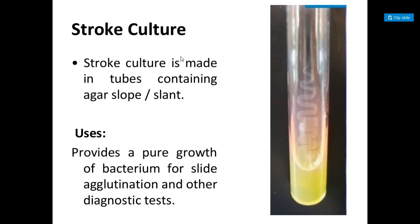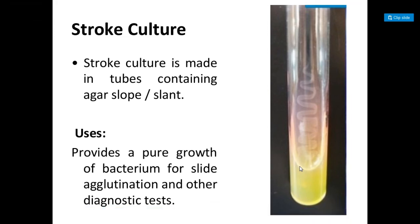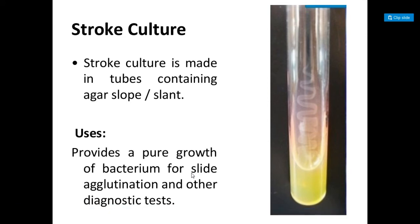The next method is stroke culture technique. Stroke culture is made in test tubes consisting of agar slopes or agar slants. Nutrient medium is added to the test tube, which is then kept in a slanted position. After solidification, the medium is distributed along the slant. This test tube is called a slant. With the help of a nichrome wire loop, the specific culture is streaked on this agar slant. This is called stroke culture. It provides a pure growth of a bacterium for slide agglutination as well as for other diagnostic techniques or tests.